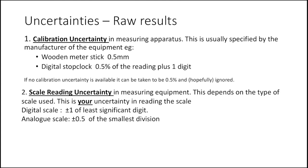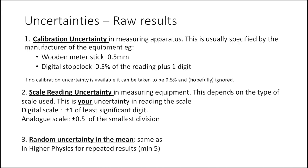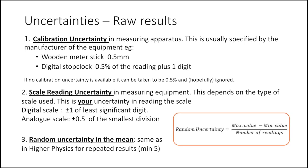The second type is the scale reading uncertainty in your measuring equipment, which depends on the type of scale. For a digital scale, the reading uncertainty is plus or minus one of the least significant digits. On an analogue scale like a ruler, it's plus or minus half the smallest division. The third is the random uncertainty in the mean — the same as Higher Physics — and you should repeat measurements a minimum of five times, using maximum minus minimum divided by the number of readings.